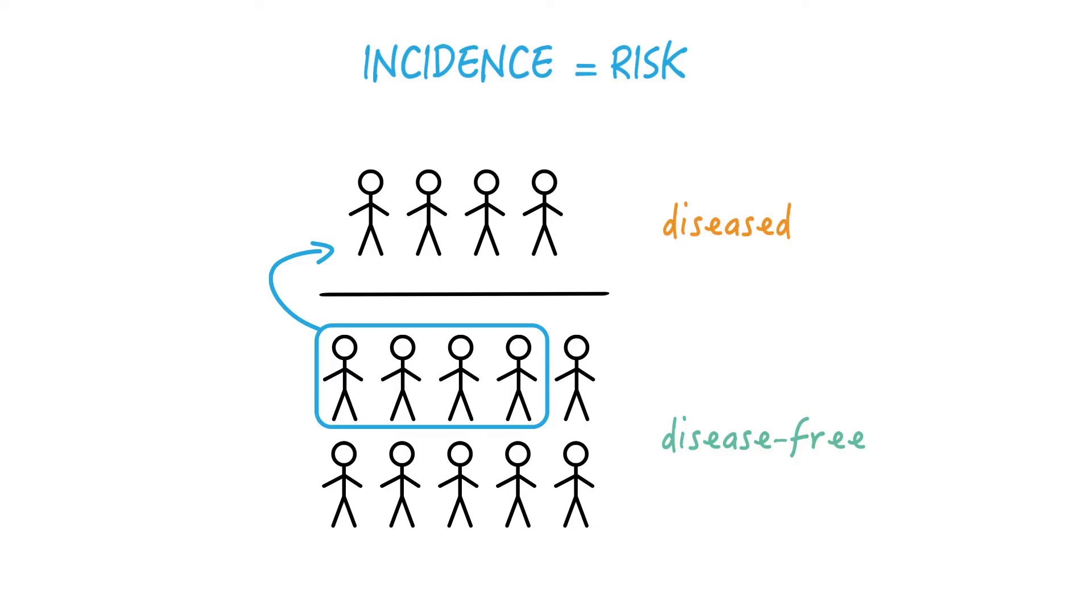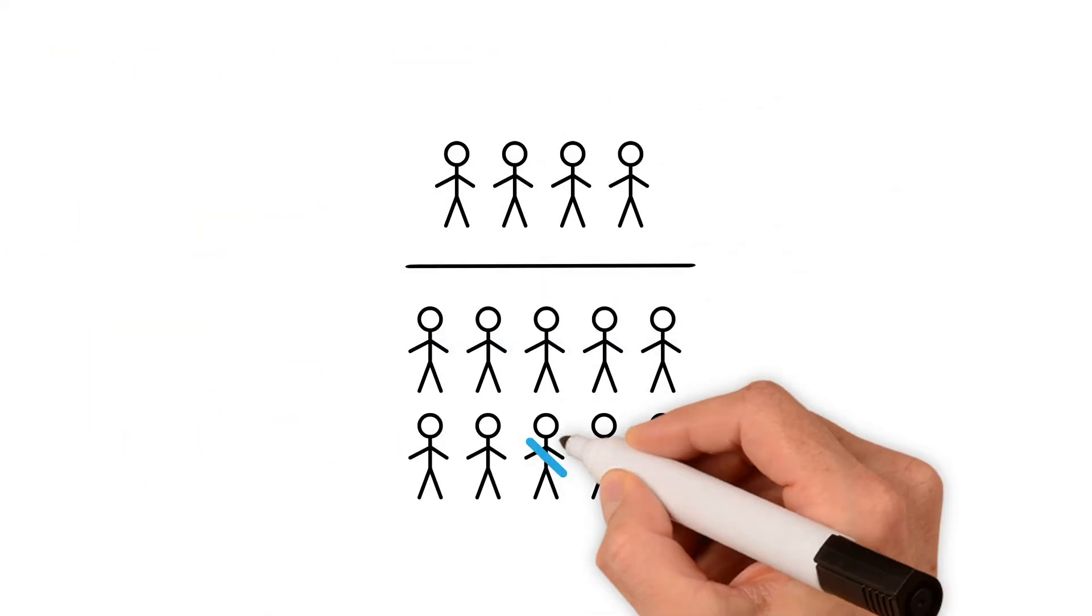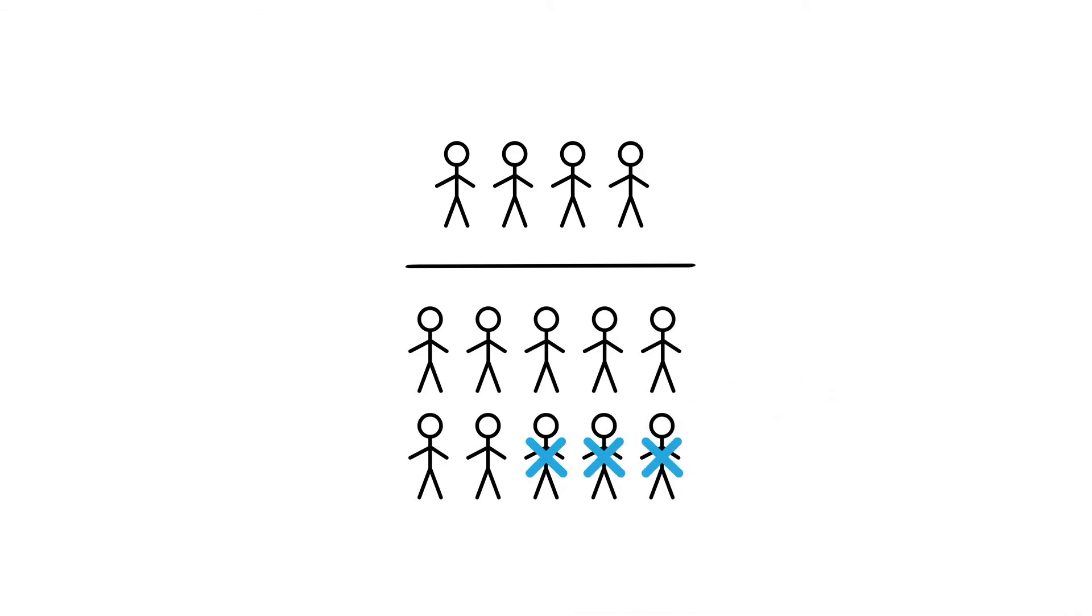So we said that everyone in the denominator must have the potential to become a member of the numerator or the disease group. Let's come back to our study of uterine cancer. If three women of our fictitious population had their uteruses removed, if they had undergone hysterectomy in other words,